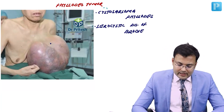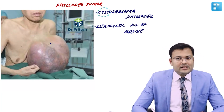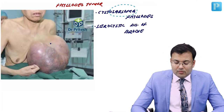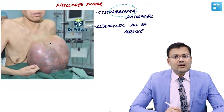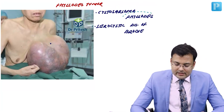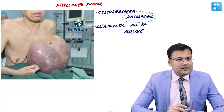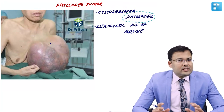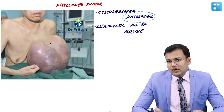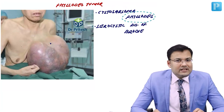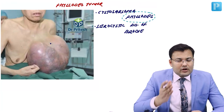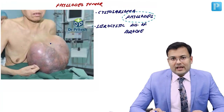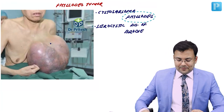Breaking down the name: there is a cyst, it's a type of sarcoma, and on cut section there is a leaf-like appearance. So it's a type of sarcoma — generally sarcomas are solid, but this one also has cystic areas, and on cut section there is a leaf-like appearance.